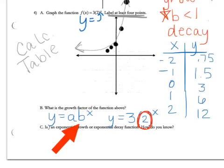And then for letter C, is F an exponential growth or an exponential decay function, and how do you know? Well, first, let me get rid of some of this stuff. Again, I was saying there are two different ways that you can tell this. The first is just by looking at the graph.